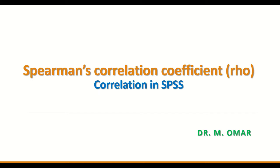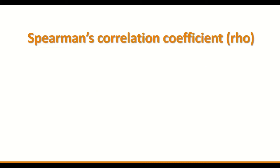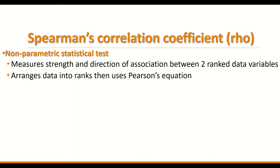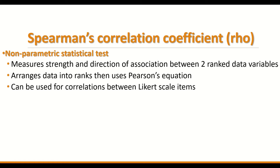Spearman's correlation coefficient, abbreviated as Rho, is a non-parametric statistical test — a test used when the data are not normally distributed. It measures the strength and direction of association between two variables: two non-normally distributed variables or two ranked data sets. The test arranges the data into ranks, then uses the Pearson equation to calculate the Rho value.